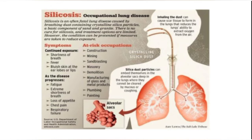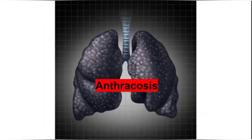Silicosis is a very serious disease — there is no treatment and it is also irreversible. The only action that can be taken is prevention, such as using face masks or ensuring enough ventilation. Anthracosis, as you can see from the picture where the color of the lungs is black, is an occupational lung disease caused by deposition of carbon particles in workers in industries associated with carbon.